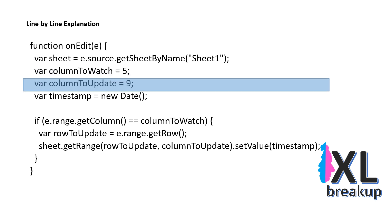This line sets the variable ColumnToUpdate to 9. This variable represents the column that we want to update with the timestamp. In this case, it's Column I, which is the 9th column.